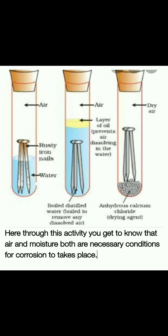Now I have taken a picture of an activity. You can see what are the necessary conditions for corrosion. In the first case, you can see the first test tube — there is water and iron nails, and there is also air in contact. You can see the iron nails will start to turn brown — corrosion will occur. After some time you will observe it. So in the first case, corrosion takes place.